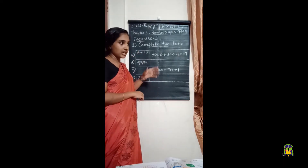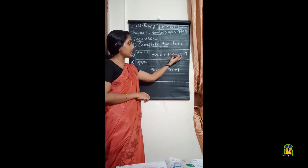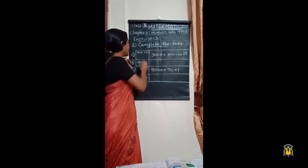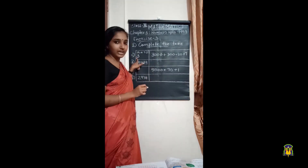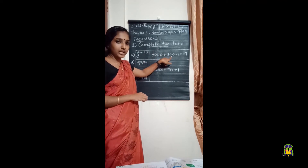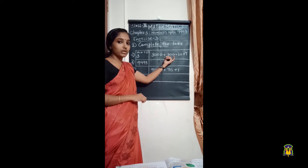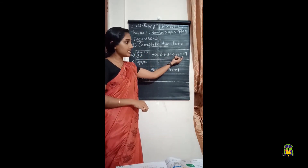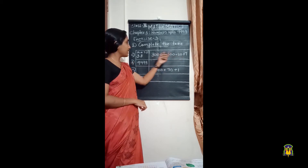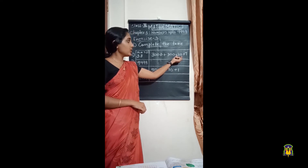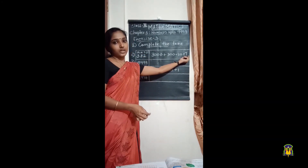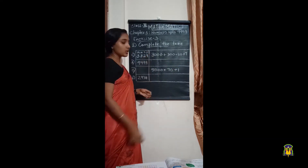It's 3000 + 300 + 20 + 7. Which number will be in the thousands place? Three — because the place value is three thousand, so three goes in the thousands place. Next, three hundreds — three will be in the hundreds place. Then twenty — twenty means two tens, so the digit two goes in the tens place. And seven is in the ones place.